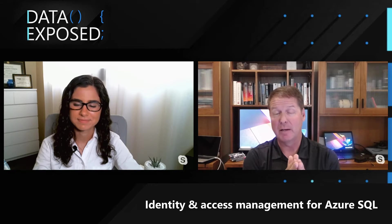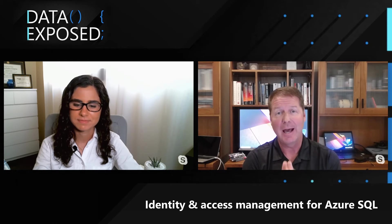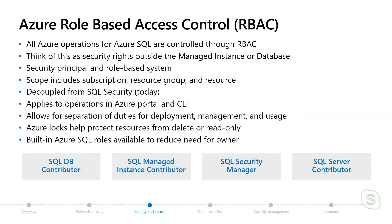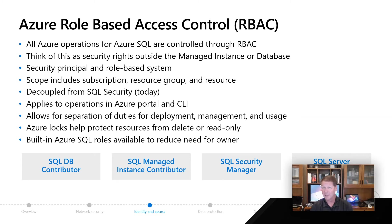In the first section of this series, you learned about network security. The second aspect of securing Azure SQL is identity and access management. When you've seen demonstrations from Anna — going into the portal, deploying an Azure SQL database, and setting up network security — you might not have noticed that she had access to Azure. Just like in your data center, where you have access controls through operating system methods, there has to be a way to give people permission to do various things in the Azure ecosystem. We call that Azure role-based access control, or RBAC.